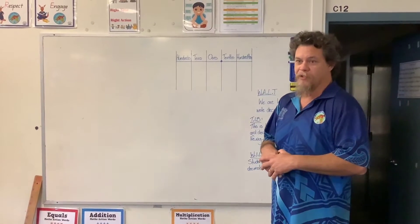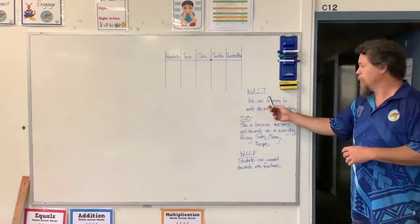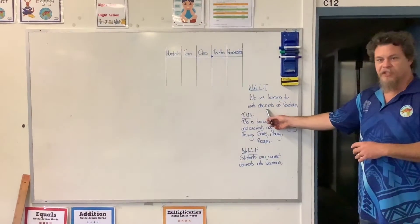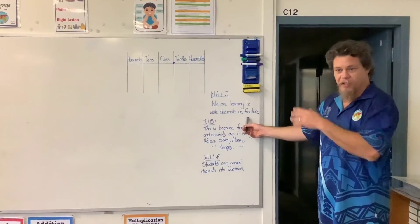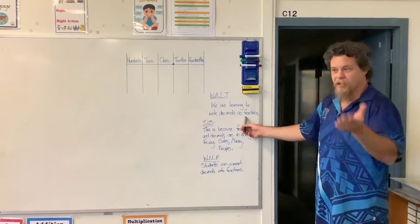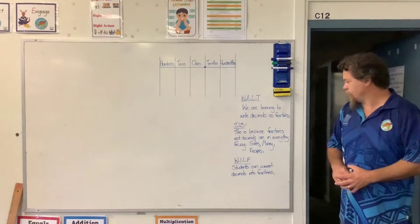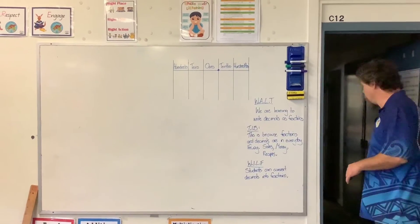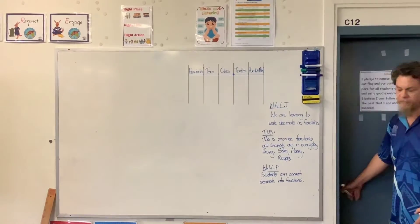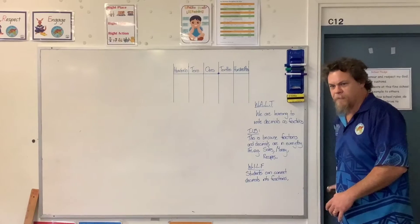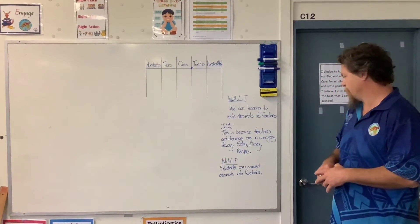We're going to be going to the hundredths. What we're learning today is we're learning to write decimals as fractions, because every decimal has an equal fraction and every fraction has an equal decimal. This is because fractions and decimals are in our everyday life — for example, in sales, to do with money, and recipes.